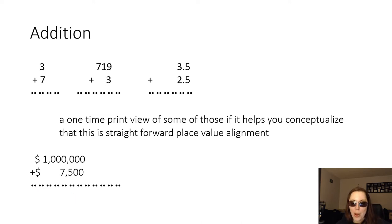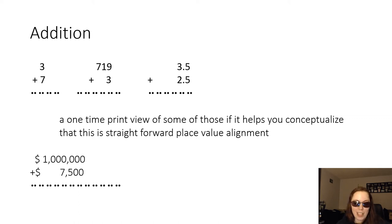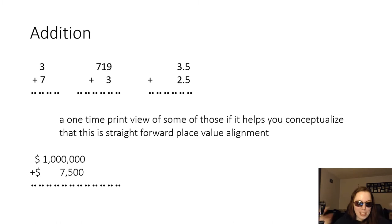In our problem with money we stacked up the dollar signs and the commas as well as all of the place values. I would even say that if a comma didn't appear in the second number, we would leave a space there so that all of the place values stayed aligned. Because the goal is to line up all the things — if you weren't going to line up everything, you wouldn't write a vertical problem; you would just put the two numbers next to each other on the same line.